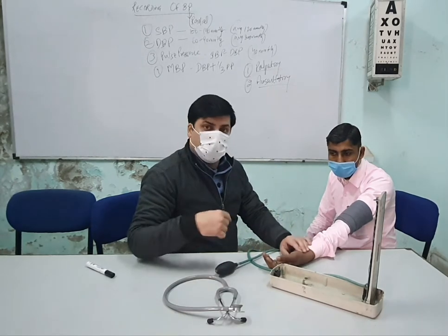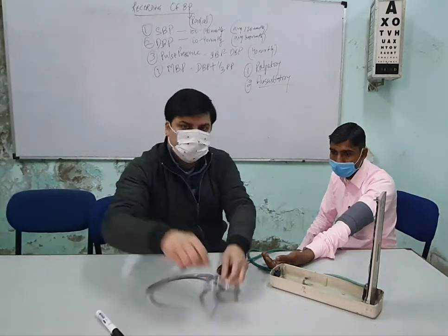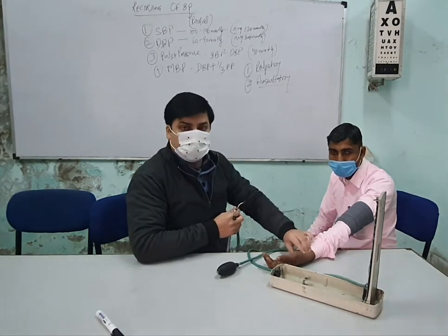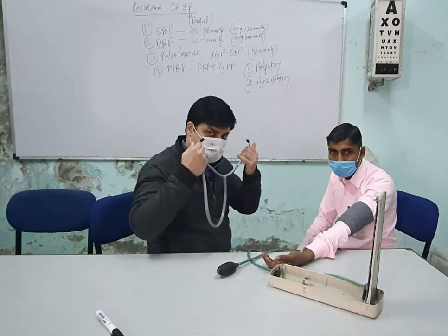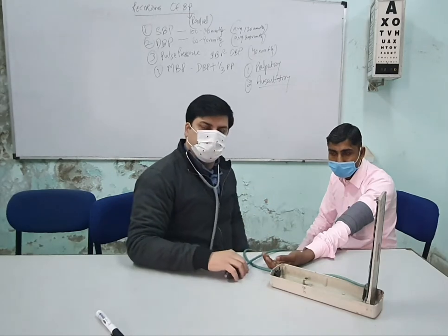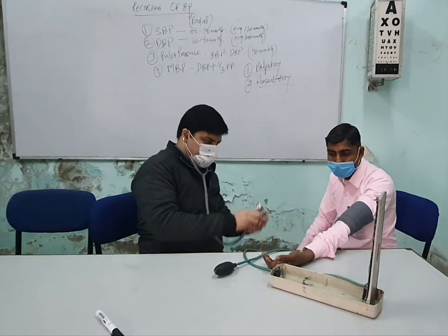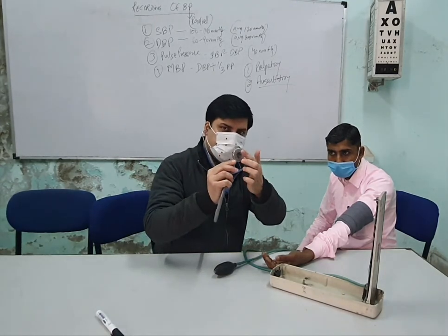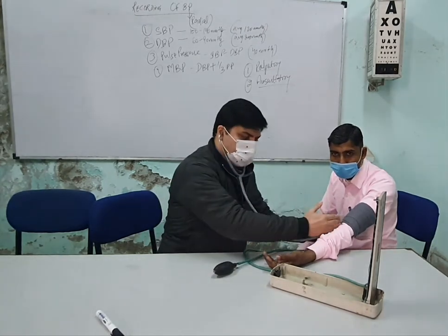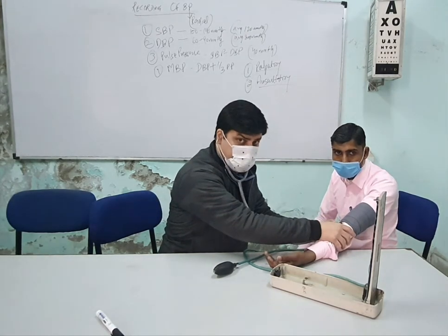For the auscultatory method, you need to use the stethoscope. Take the systolic BP reading already obtained from the palpatory method. This time, place the diaphragm of the chest piece over the brachial artery, near the biceps tendon in the cubital fossa.